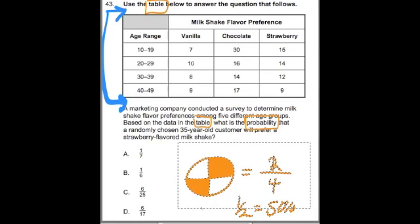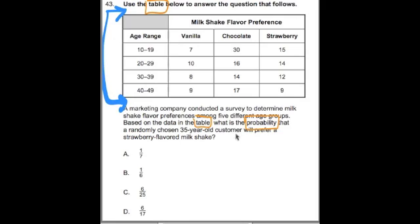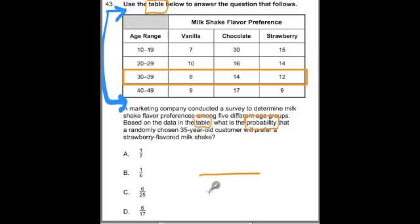Now let's apply this to the problem. We're going to look at the age in the 35 range. What is the probability that a randomly chosen 35-year-old customer will prefer strawberry? I identified that age — 35 is right in between 30 and 39. So what is my part and what is my whole? My whole represents everyone in that age group, and my part just represents the strawberry.